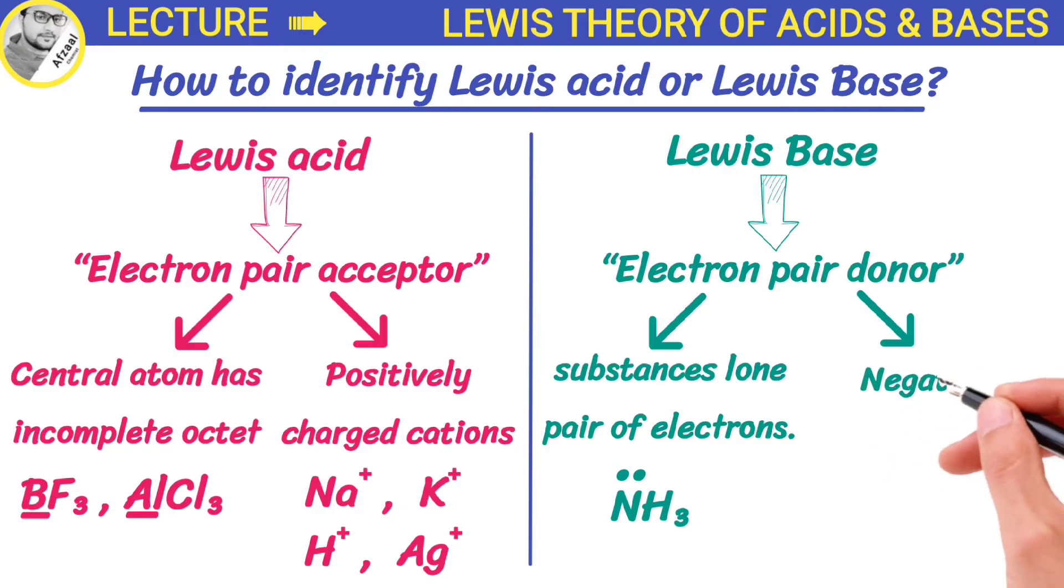On the other hand, negatively charged substances or anions can also donate electron pairs. For example, chloride and hydroxide ions act as Lewis bases.